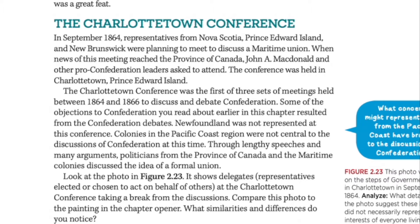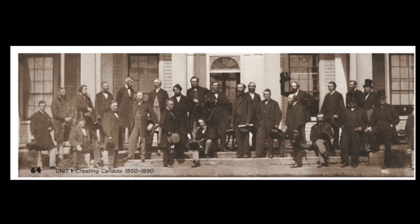Through lengthy speeches and many arguments, politicians from the Province of Canada and the maritime colonies discussed the idea of a formal union. Look at the photo in figure 2.23 — it shows delegates, representatives elected or chosen to act on behalf of others, at the Charlottetown Conference taking a break from the discussions. Compare this photo to the painting in the chapter opener and notice the similarities and differences.